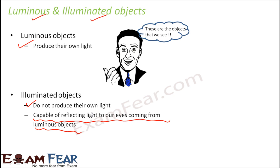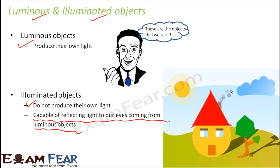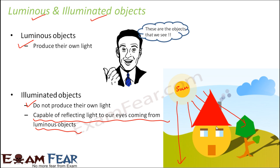This will become clear with this picture. Here you can see the sun — the sun is capable of producing its own light, so the sun is a luminous object. Now the sun's light falls on various objects on the earth; for example, it falls on this house, on the tree, and on the grass. The house, the tree, and the grass do not produce their own light, but all of them are capable of reflecting the light falling on them from the sun to our eyes. So when we look at this house, the light reflected from the house reaches our eyes and that is how we are able to see it. These are illuminated objects — they are capable of reflecting light coming from a luminous object.